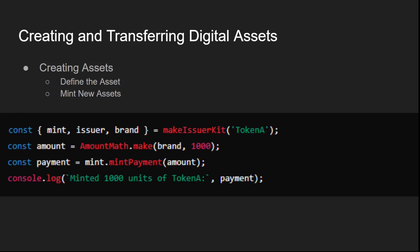The creation of digital assets in Agoric involves using mints and issuers. First, use the MakeIssuerKit function to create a new issuer kit, which includes the issuer, brand, and mint for the asset.